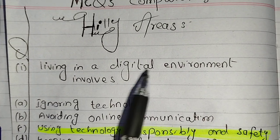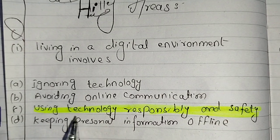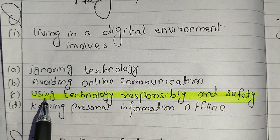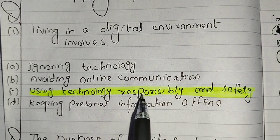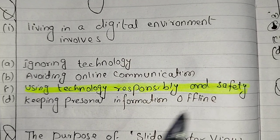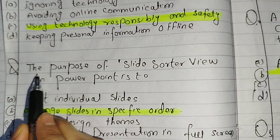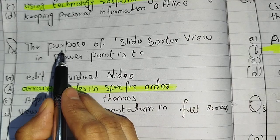Living in a digital environment involves... You have options A, B, C, D. The correct answer is using technology responsibly and safely.